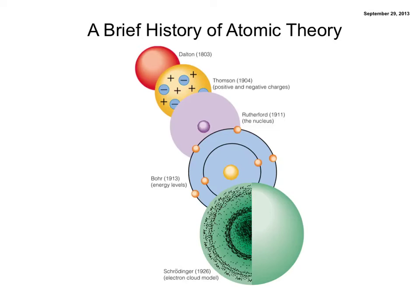A few years later, Ernest Rutherford discovered the nucleus of the atom and that it was positively charged with the electrons outside of the nucleus in empty space. A few years after that, Bohr proposed a model where the location of the electrons was a little bit more specific. He said that the electrons were in these orbits or set paths around the nucleus. And finally, the quantum mechanical model talks about the electrons being located within these different regions of probability within the atom. We will discuss this model further later.